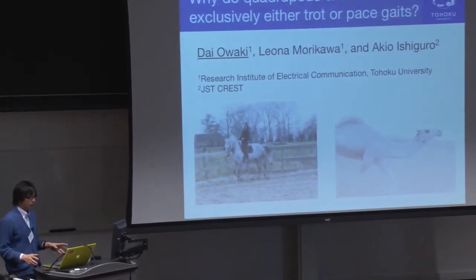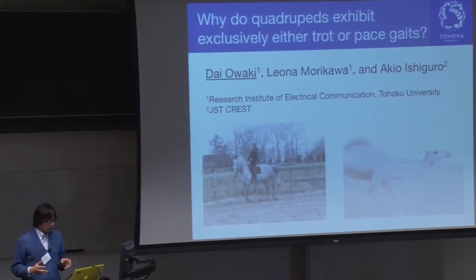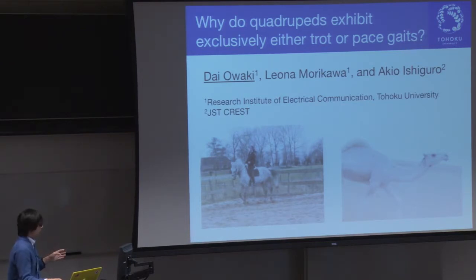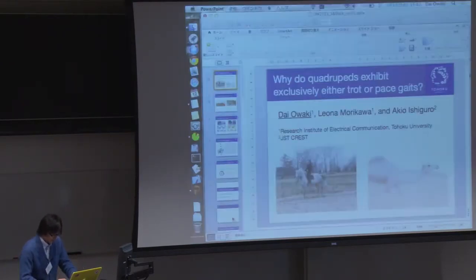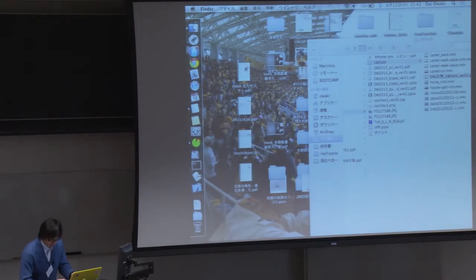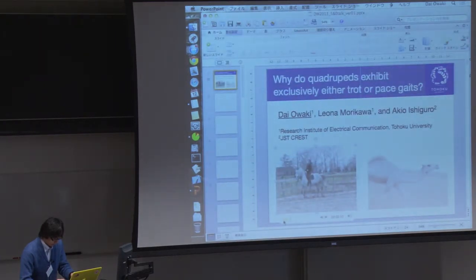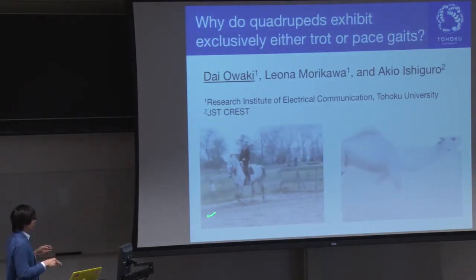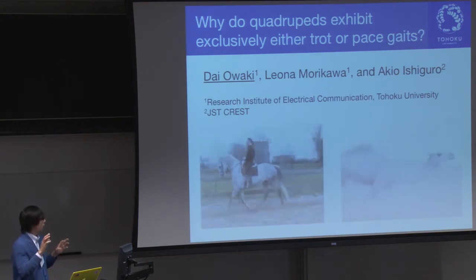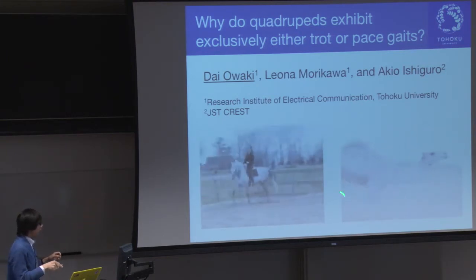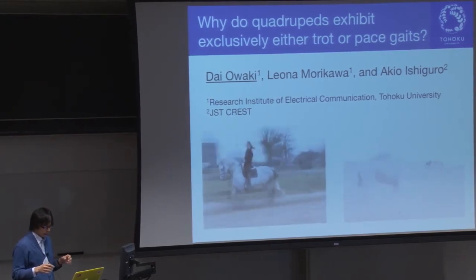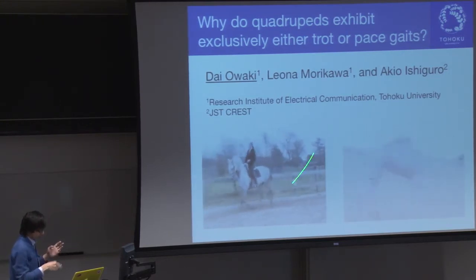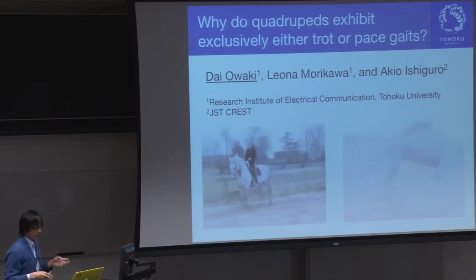So, my name is Zaraki from Tohoku University, Japan. The motivation of this study is to understand why quadrupeds exhibit exclusively either trot or pace gait, according to the animal species. For example, horses exhibit trot gait in middle speed locomotion in which the diagonal foot touch down at the same time like this and like this. On the other hand, the camel exhibit pace gait in middle speed locomotion in which the ipsilateral foot touch down at the same time like this and like this. So, we'd like to know why. Why these animals exhibit this gait pattern according to animal species.